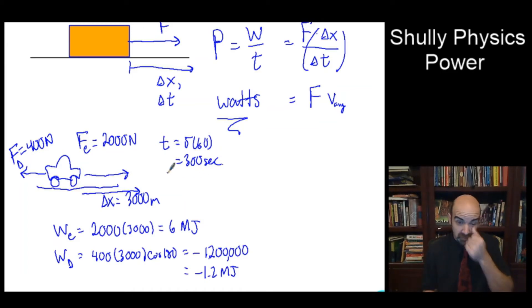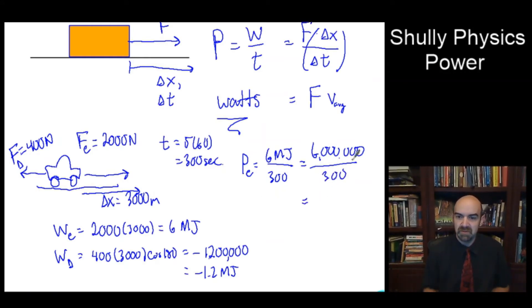So how powerful is all this? Well, the power output of the engine, if that's our question - what's the power output of the engine? We're just looking at the work done by the engine. So that'd be the 6 megajoules divided by the time, 300 seconds. Now it's really 6 million divided by 300. Let's do a little bit of mental math here. Take those off and we're left with a 2 and 4 zeros. So we've got 20,000 watts or 20 kilowatts of power is our power output of the engine.